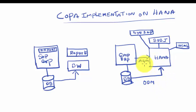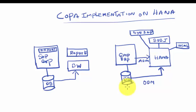A drawback of the agile data mart is it may not be real time in all cases, because data has to come through the application layer and then be pushed to HANA. With the operational data mart you are directly talking to the transaction database and hence you get live data. Both have different advantages and disadvantages, and based on the use case you can decide what you want to do.